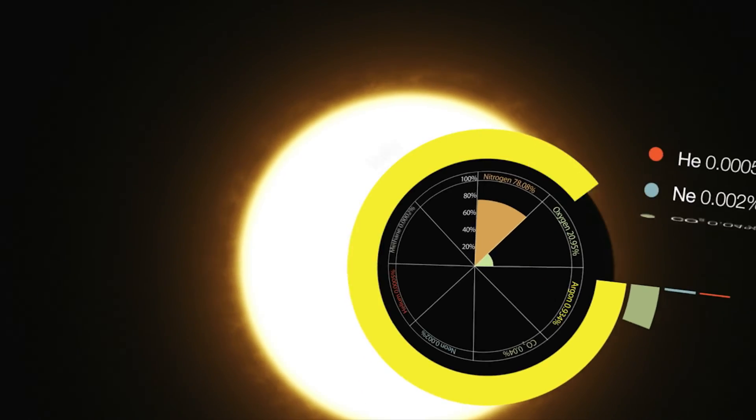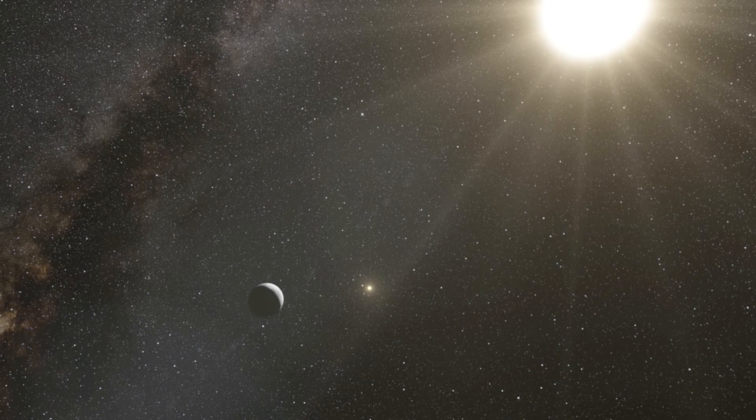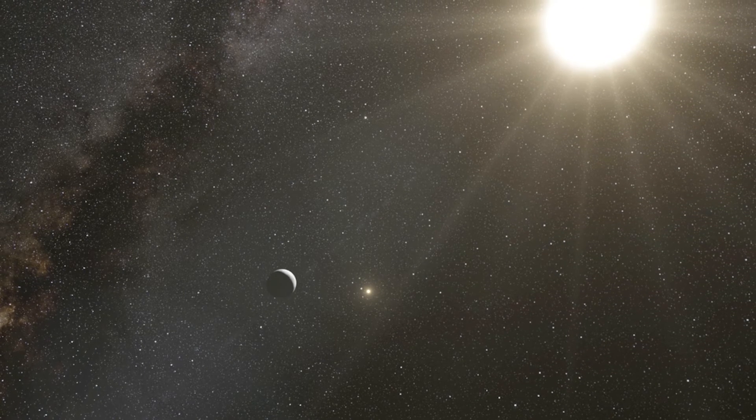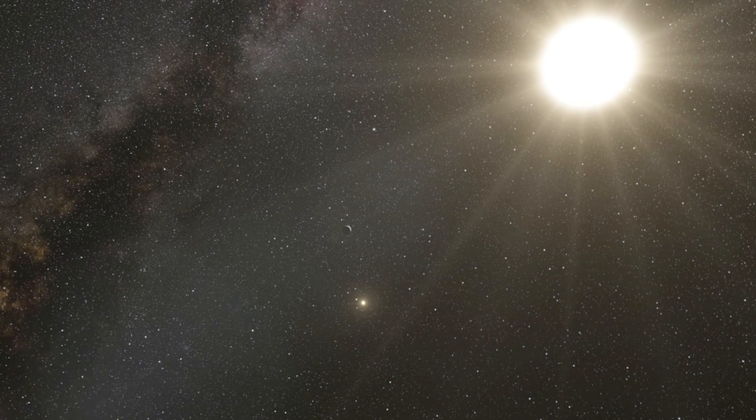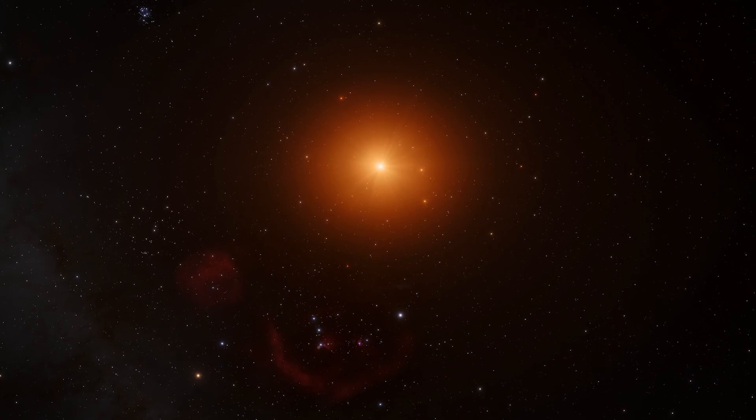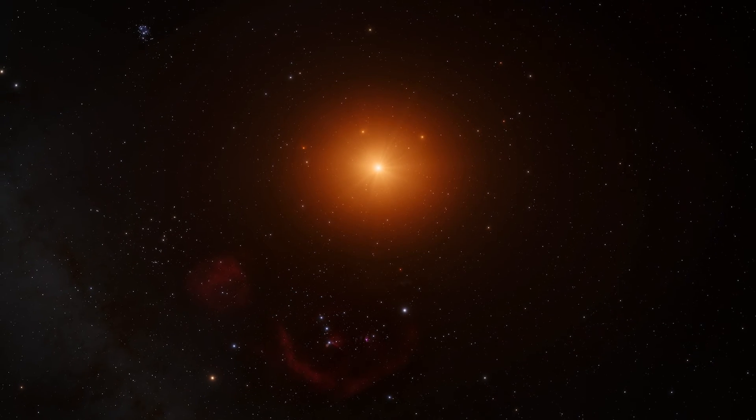To date, astronomers have used Hubble to observe the atmospheres of gas giant planets that transit their stars. But terrestrial planets are much smaller objects and their atmospheres are thinner. Therefore, analyzing these signatures is much harder.